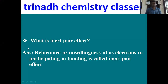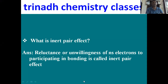Next: what is the inert pair effect? The reluctance, or unwillingness, of ns electrons to participate in bonding is called the inert pair effect.